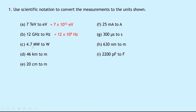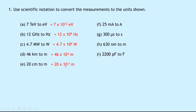Part C: 4.7 megawatts to watts. Mega is times 10 to the power of 6, so this becomes 4.7 times 10 to the 6 watts. Part D: 46 kilometers to meters. Kilo means times 10 to the power of 3, so we get 46 times 10 to the 3 meters. For part E we've got 20 centimeters to meters. Centi is times 10 to the power of minus 2, so we get 20 times 10 to the minus 2 meters.